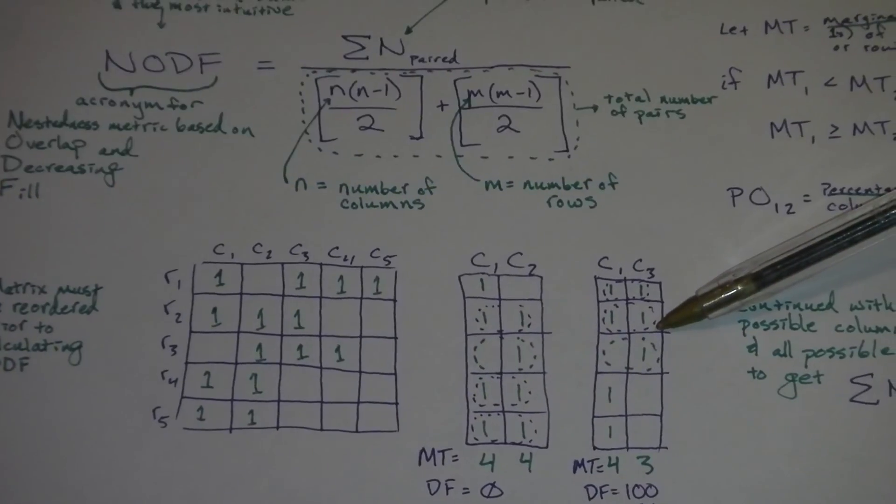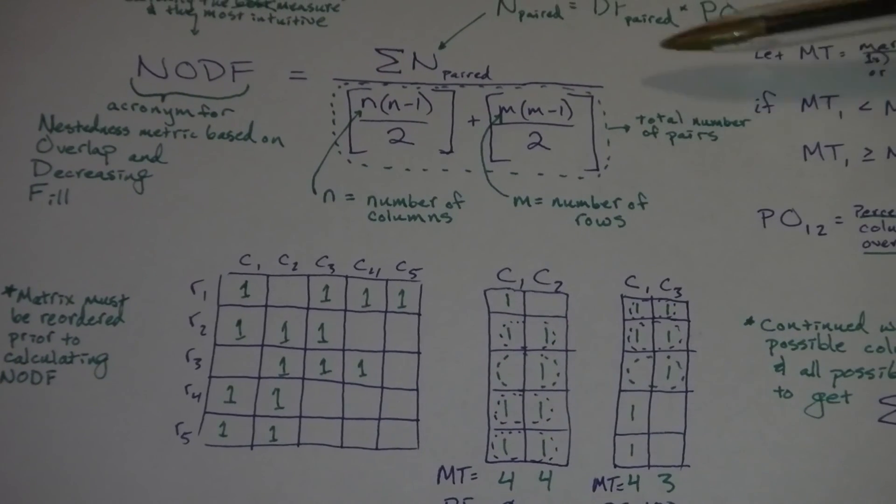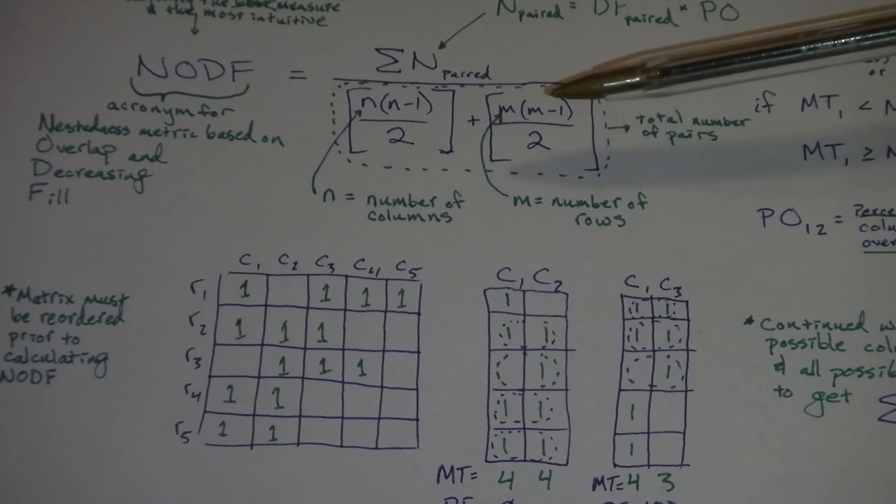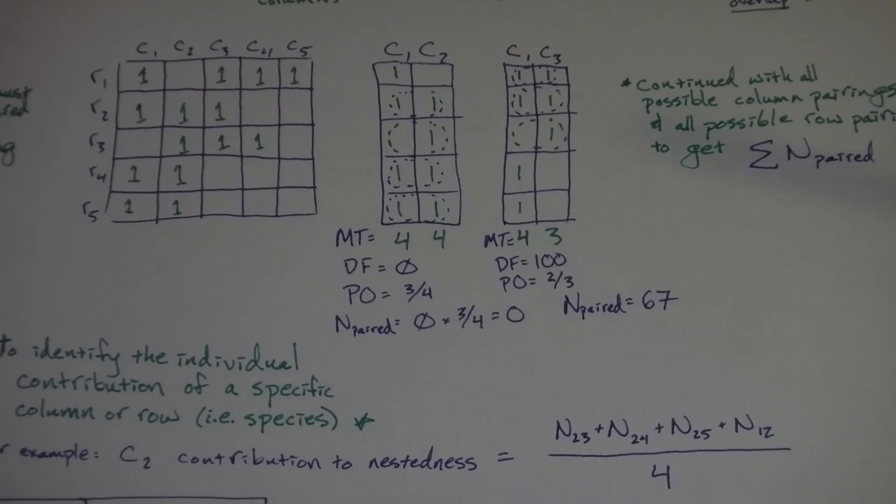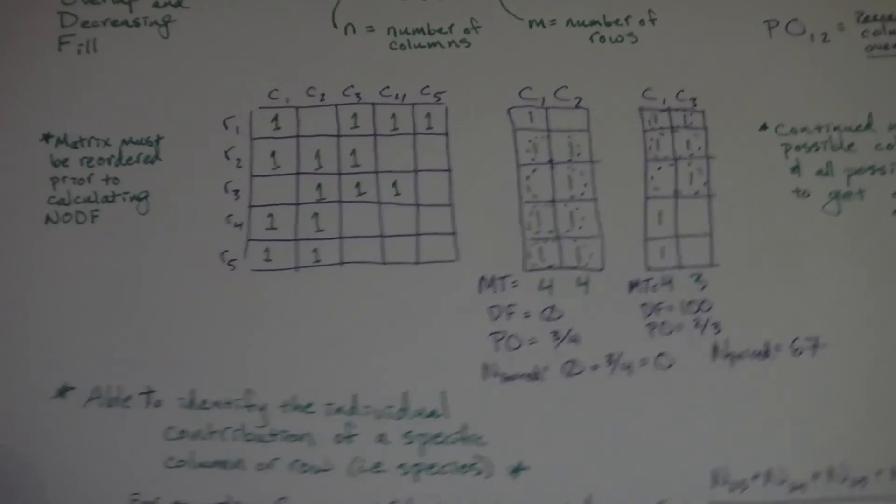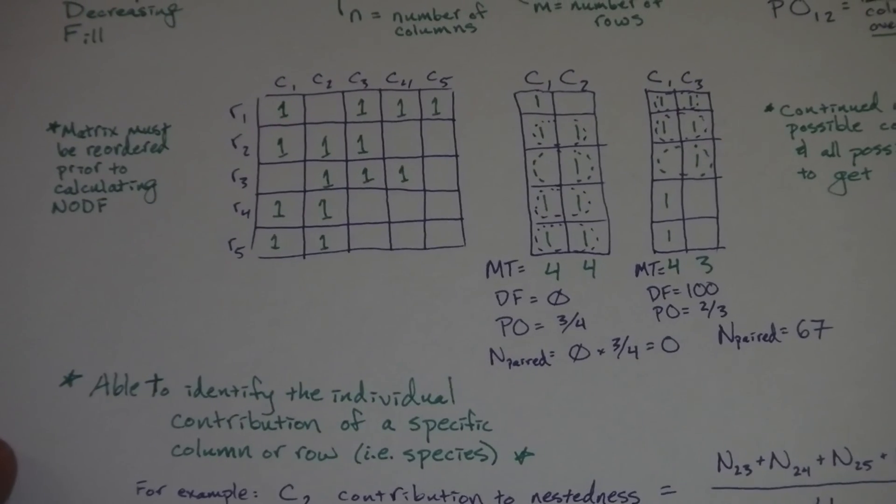And then, again, this is divided by the total number of possible pairs, which is calculated this way. So I hope that tutorial was helpful on how to calculate nestedness.